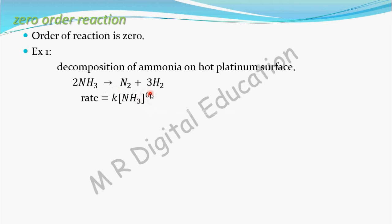The power is zero, so order equals zero. The concentration of NH3 to the power zero equals 1, because any number to the power zero is 1. So this term equals 1, and K multiplied by 1 equals K. Therefore, rate equals K.